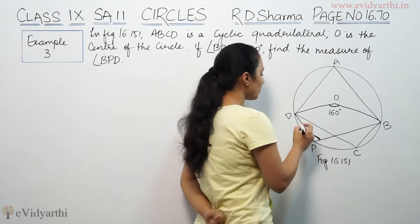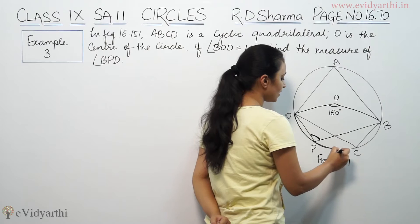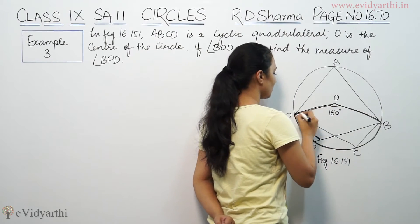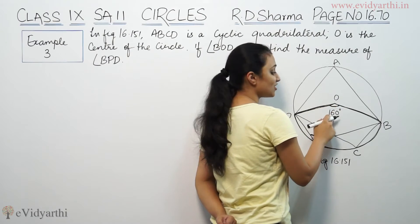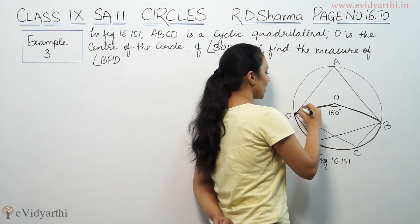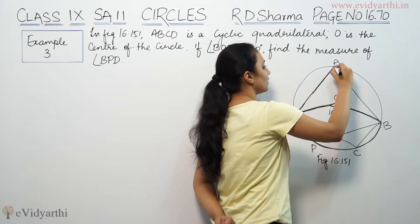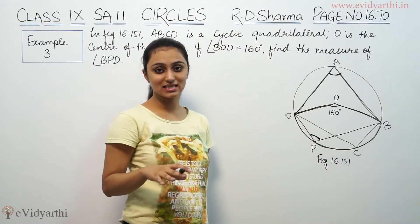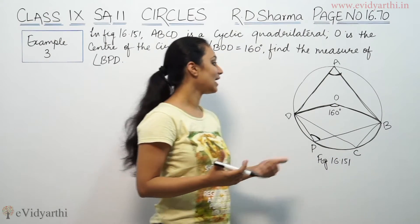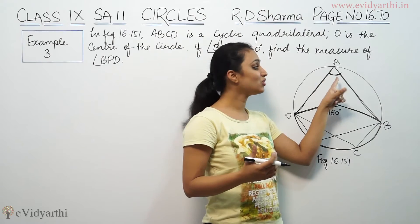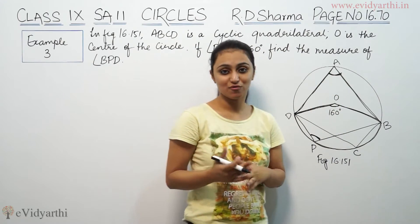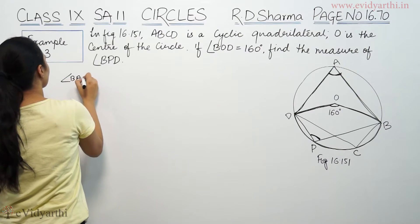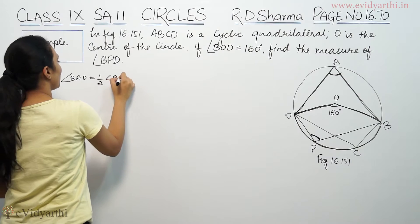So if you see, this arc has one angle at the center, which is angle BOD equal to 160 degrees. This same arc has another angle, which is angle BAD. So angle BAD will be half of angle BOD, because the arc is the central arc.